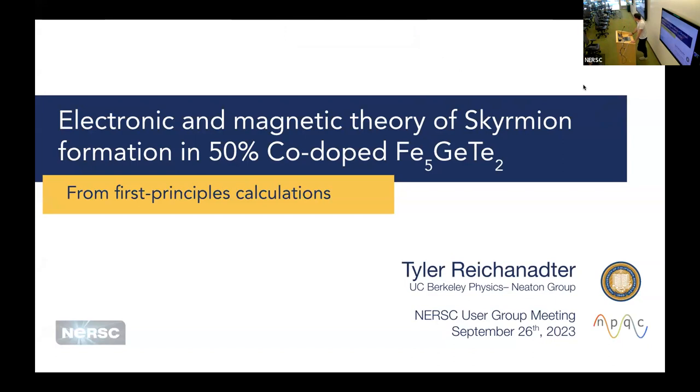So I've had the fortunate pleasure of being able to use Perlmutter and NERSC resources. I was just going to give a quick talk going through some of the highlights of recent structural investigations into this very new novel layered magnetic material called FGT. In particular, we're looking at the cobalt doped case of this system and some of the really exotic magnetic textures that evolved because of this doping.